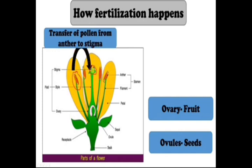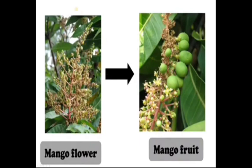The pollen grains pass through the stigma, either by the presence of wind or by the presence of honeybees. When it reaches the ovary — the female part — the ovary swells and is converted to a fruit. The ovules which are inside the ovary turn to seeds after fertilization. The pollen grains help fertilization and finally undergo fertilization.